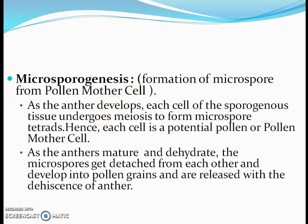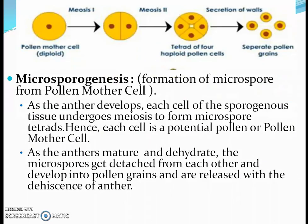Each cell has the potentiality to form pollen grains. As the anther matures and dehydrates, the microspores get detached from each other — when hydrated they remain attached, but when dehydrated they become separated. They develop into pollen grains and are released with the dehiscence of the anther. The pollen mother cell undergoes meiosis and forms four pollen cells, which are haploid in nature.